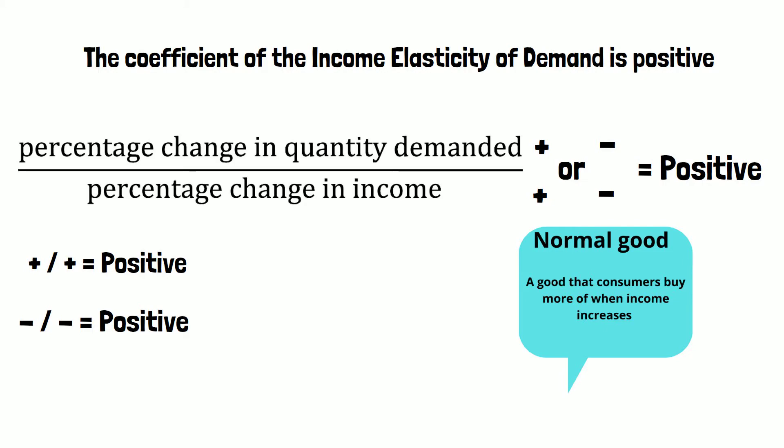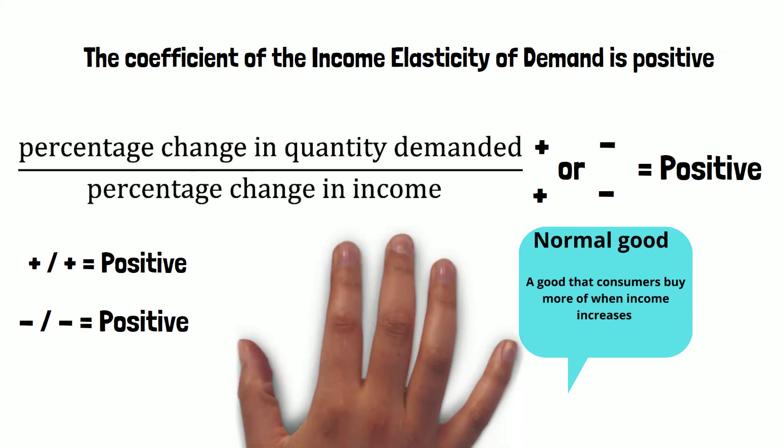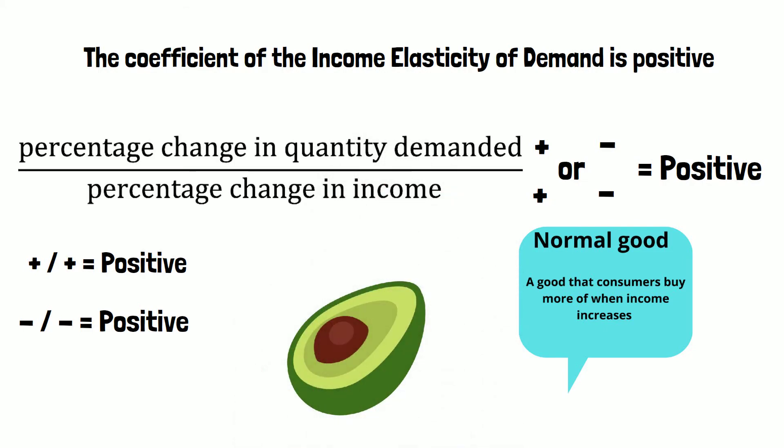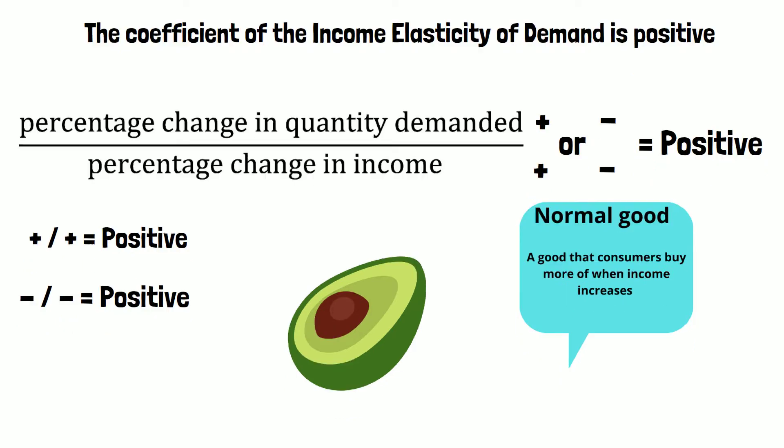This type of good is known as a normal good. An example of this is an avocado — when income rises, the quantity of avocados demanded also rises. So, a positive coefficient means that we are speaking of a normal good.